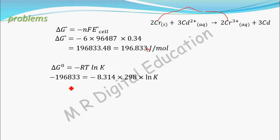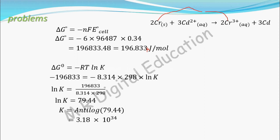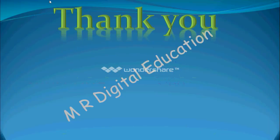Take the −8.314 × 298 to the other side by dividing, and the two minus signs cancel, giving ln K = 79.44. Taking the antilogarithm (natural log base e), K = 3.18 × 10³⁴. This is the equilibrium constant. That completes the problem.